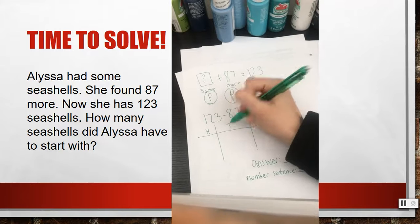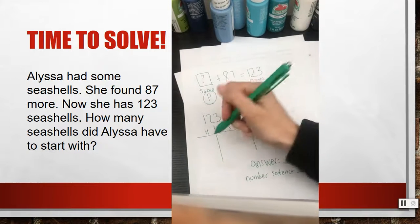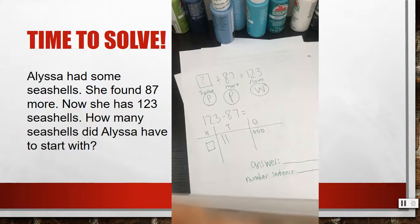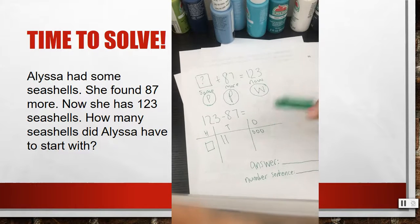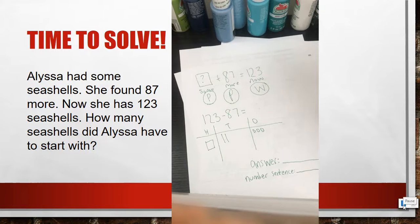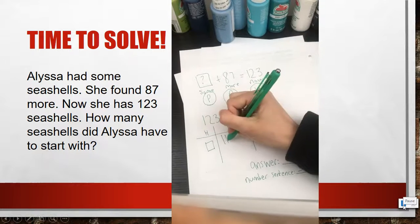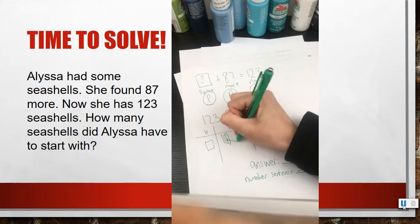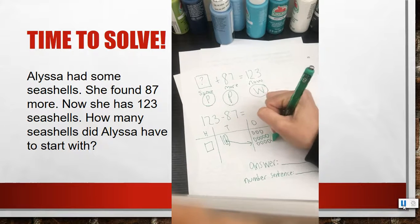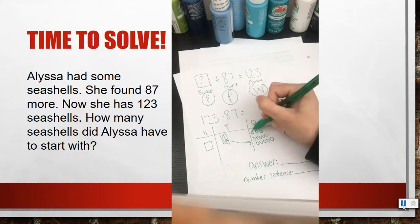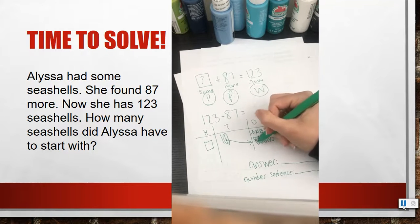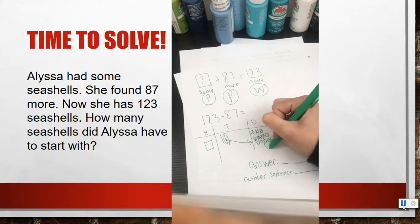So now I need to solve 123 minus 87. I start with my place value chart and I'm going to model 123. Now I need to take away seven ones. Do I have seven ones right now that I can take away? No, I only have three. So how could I get more ones? I'm going to change a 10 for 10 ones: 3, 4, 5, 6, 7, 8, 9, 10. Now I can take away seven ones: 1, 2, 3, 4, 5, 6, 7. How many do I have left? 1, 2, 3, 4, 5, 6. Making sure I'm right.